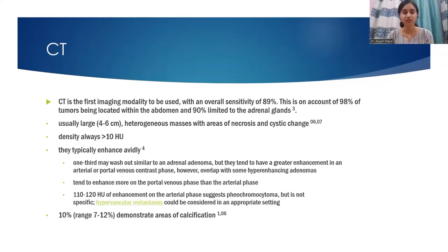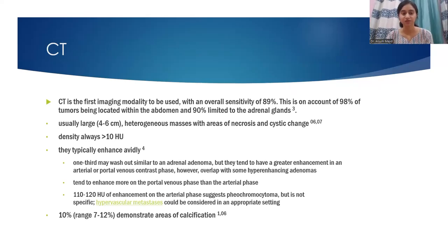On CT: CT is the first imaging modality to be used, with an overall sensitivity of 89%, given that 98% of tumors are located within the abdomen and 90% are limited to the adrenal glands. They are usually large, 4 to 6 cm, heterogeneous masses with areas of necrosis and cystic change. Density is always more than 10 HU. They typically enhance avidly. One third may wash out similarly to an adrenal adenoma, but they tend to have greater enhancement in the arterial or portal venous contrast phase, though overlap exists with some hyper-enhancing adenomas. They tend to enhance more on the portal venous phase than the arterial phase. Enhancement of 110 to 120 HU on the arterial phase suggests Pheochromocytoma, but is not specific. Hypervascular metastasis could be considered in an appropriate setting. 7 to 12% demonstrate areas of calcification.